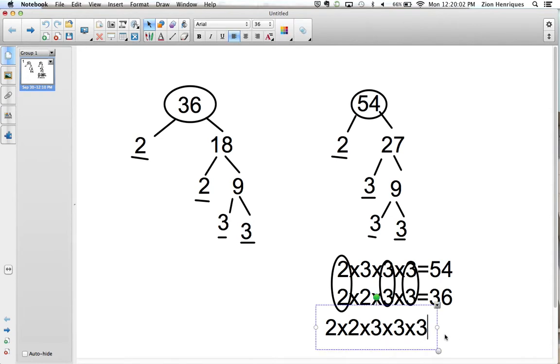We have 2 times 2 times 3 times 3 times 3. And so 2 times 2 is 4 times 3 is 12 times 3 is 36 times 3 is 108. So that's the final answer. That is the least common multiple. And so what that means is, the multiples is like the multiples of 3 are 3, 6, 9, 12, and so and so. So the least common multiple is the lowest multiple that they both have in common. So 108 is the least common multiple.